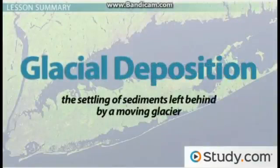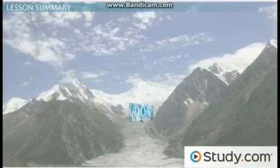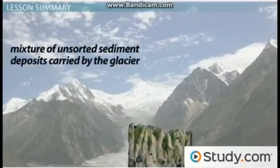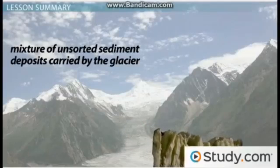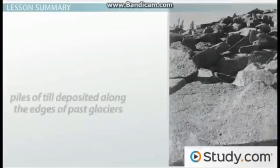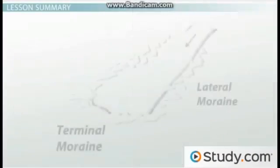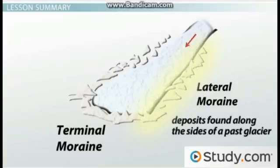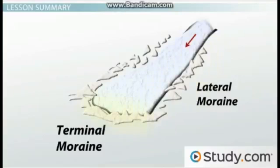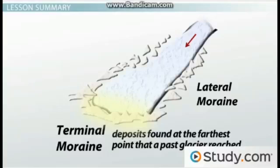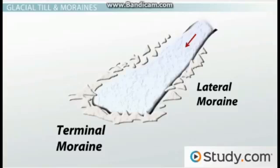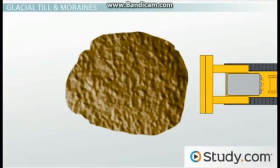Let's review. Glacial deposition is a settling of sediments left behind by a moving glacier. As glaciers move over the land, they pick up sediments and rocks. The mixture of unsorted sediment deposits carried by the glacier is called glacial till. Piles of till deposited along the edges of past glaciers are called moraines. Lateral moraines are deposits found along the sides of a past glacier, and terminal moraines are deposits found at the farthest point that a past glacier reached.